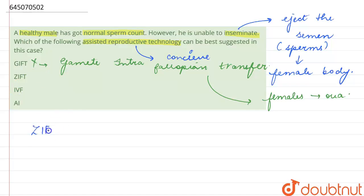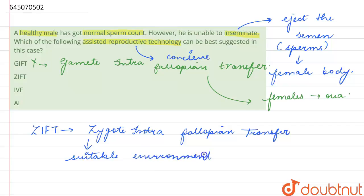Then second option is ZIFT. ZIFT is zygote intra fallopian transfer. This method is used for those females which are unable to produce the female gamete, that is ova, but can provide a suitable environment for the zygote to develop. So again, this is the wrong answer because here we are seeing only the male with normal sperm count but unable to inseminate.